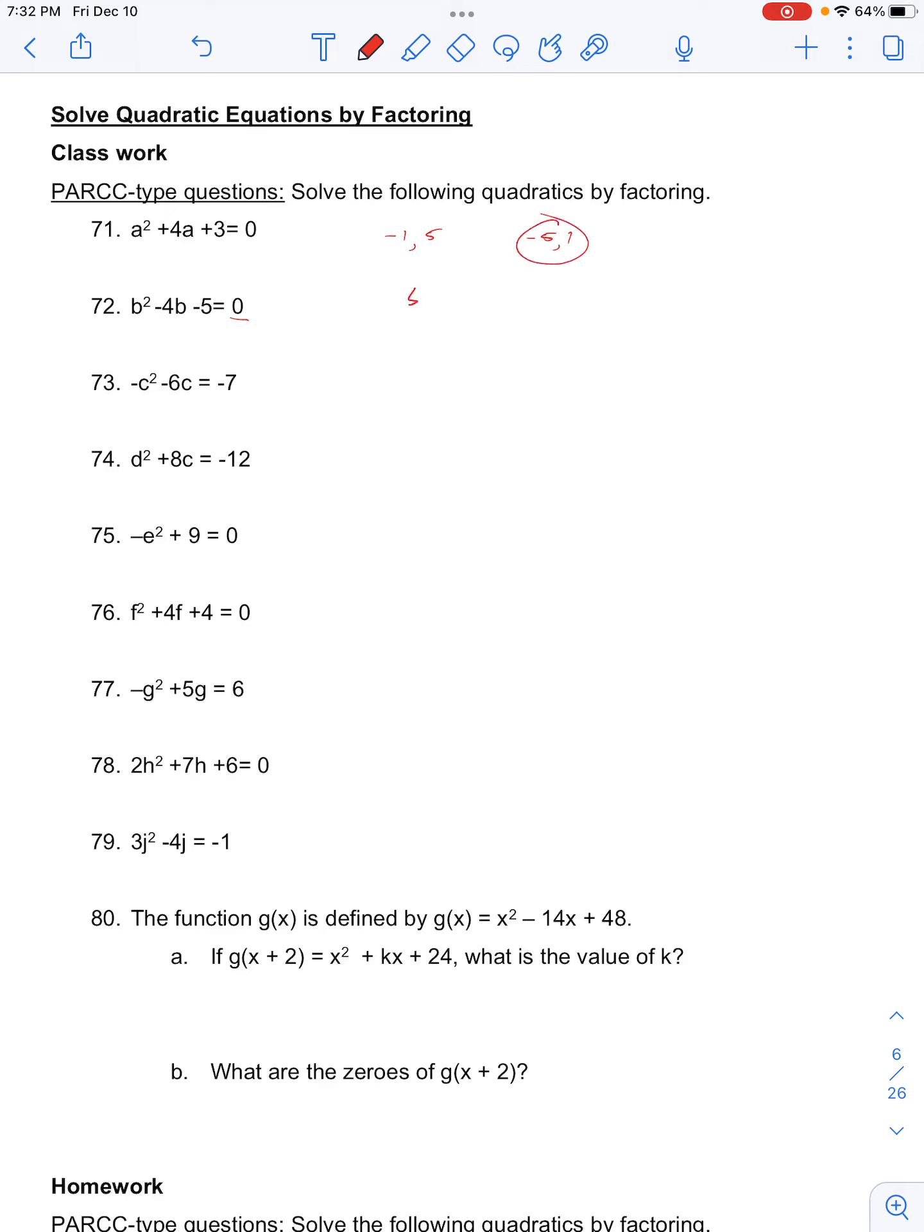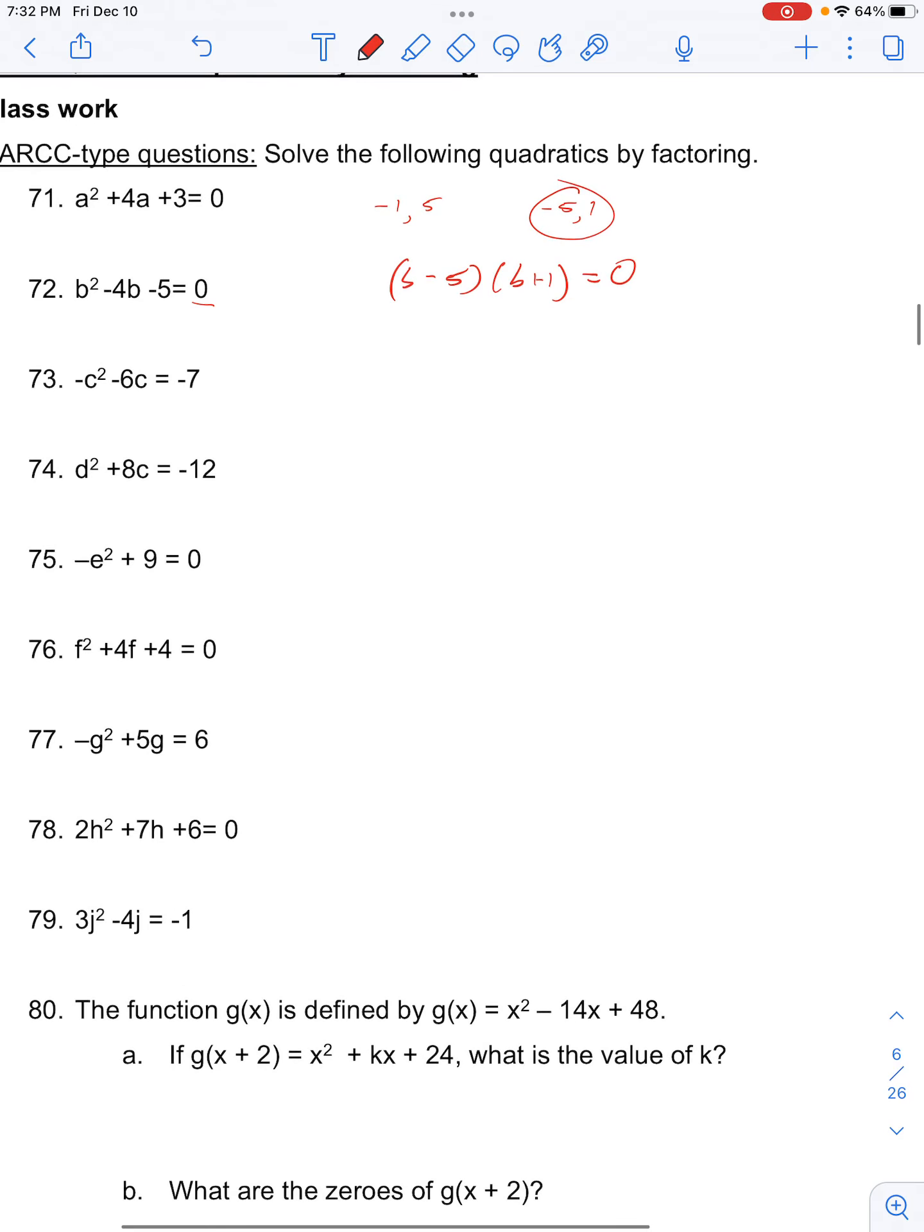So we have b minus 5 times b plus 1 equals 0. And using the zero product property, then we can set b minus 5 equal to 0, and b plus 1 equal to 0. And so b equals 5, and b equals negative 1.